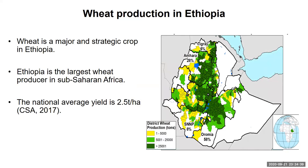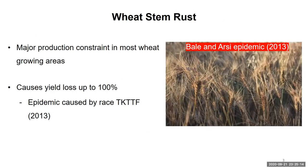To start with the background: wheat is a major and strategic crop in Ethiopia. Ethiopia is the largest wheat producer in sub-Saharan Africa. This map indicates the production areas in Ethiopia. The national average yield is 2.5 tons per hectare, which is by far lower than the world average. This may be due to biotic stress, among which wheat stem rust disease is a major production constraint in wheat-growing areas, causing yield loss of up to 100%.